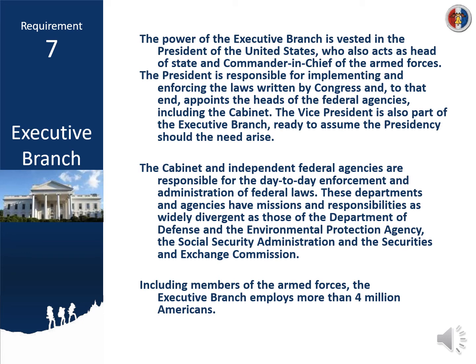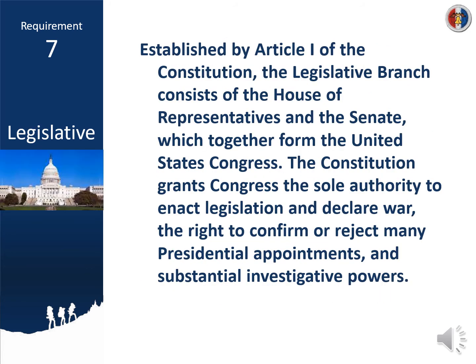For checks and balances on the other branches: the president nominates the judges, and the president can veto laws enacted by Congress. Congress was established by Article One of the Constitution. You have direct election of your senators and congressmen, so people have a direct role there. Congress passes the laws, they can override the president's veto to check his power, and they confirm his judges — so they have a role in who sits on the judiciary and can check his power of nominating judges.